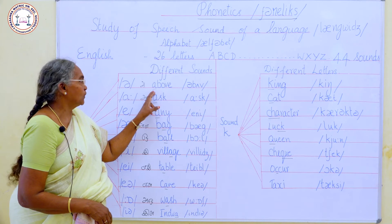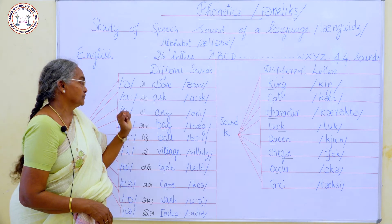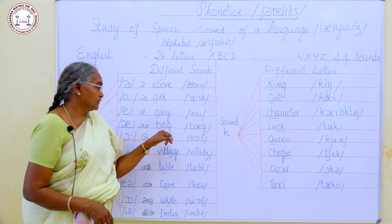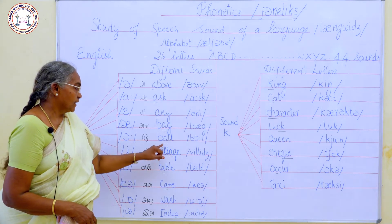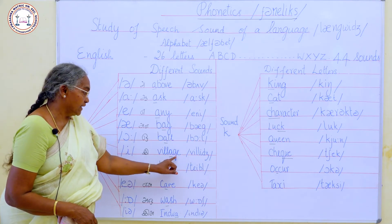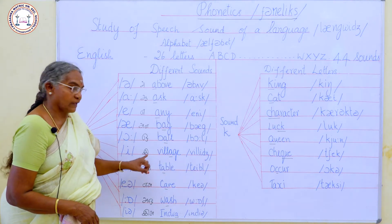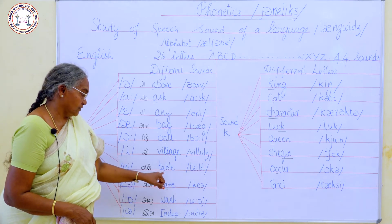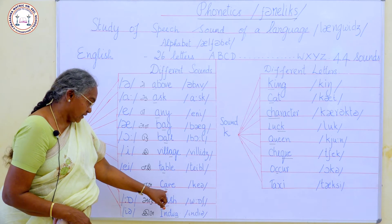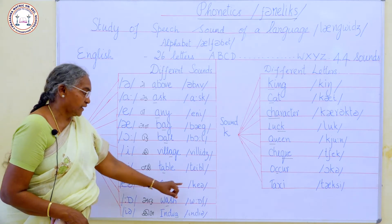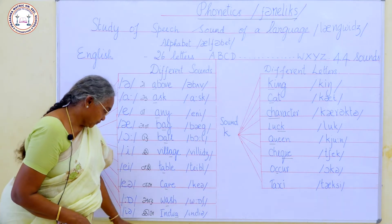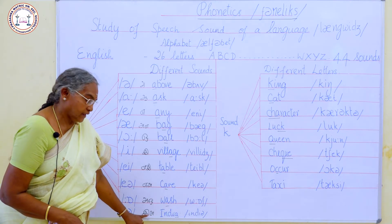Above — the A makes a schwa sound. Ask — the A makes a short 'a' sound. Any — the A makes a short 'e' sound. Bag — A has the short 'a' sound. Ball — A has the sound 'O'. Village — A has the sound 'E'. Table — A is read as 'AY'. Car — A is read as 'AA'. Wash — A is read as 'AU'. India — A is read as 'AA'.